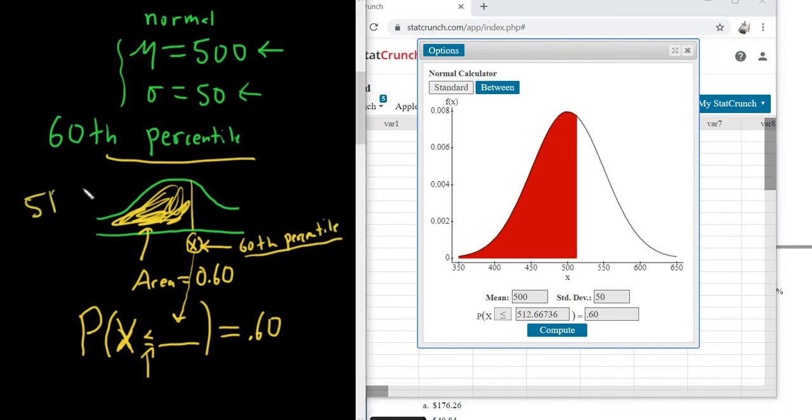So 512.67. So that's the answer, right? That's the 60th percentile. So it's the number such that 60% is to the left. So the area to the left of this number is 0.60.